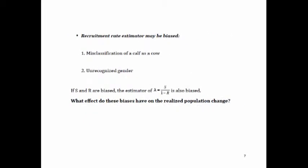Similarly, recruitment rate can be biased. Judging whether something is a calf or a cow at age one is pretty difficult. There could be misclassification of a calf as a cow, or unrecognized gender. All of you are biologists — you can figure out how many different ways this could be biased. My goal is to say: if survival S and recruitment R are biased, lambda is biased — what effect does that have?